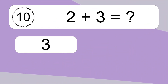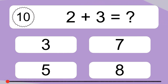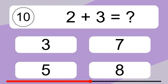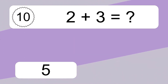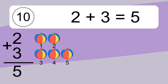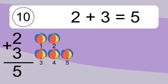2 plus 3 equals what? 2 plus 3 equals 5. Let's count it: 1, 2, 3, 4, 5.